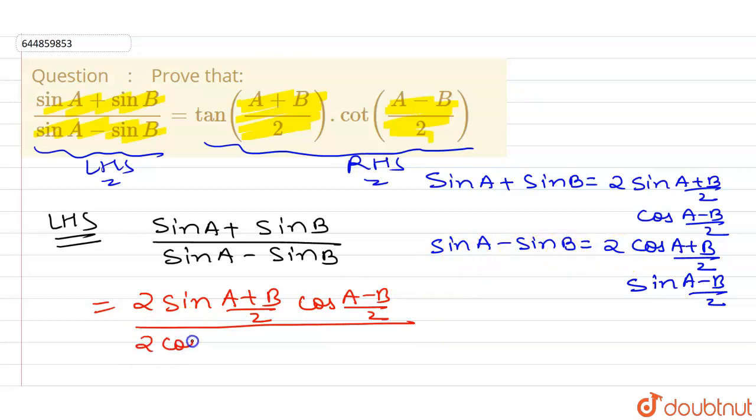Sine A minus sine B value is this, so I can write here 2 cos A plus B by 2 sin A minus B by 2. So this 2 gets cancelled from numerator and denominator.